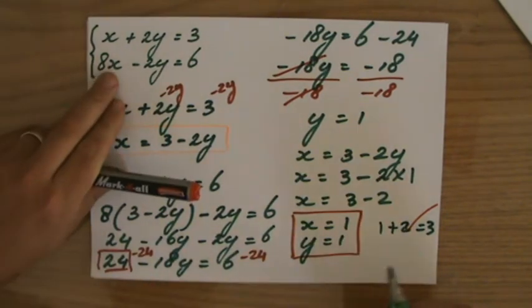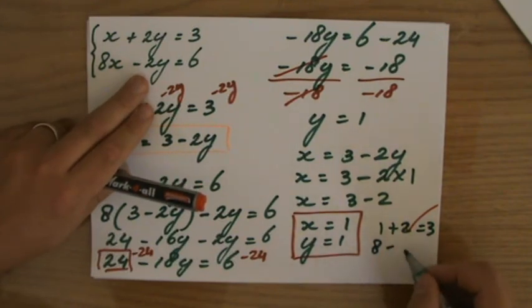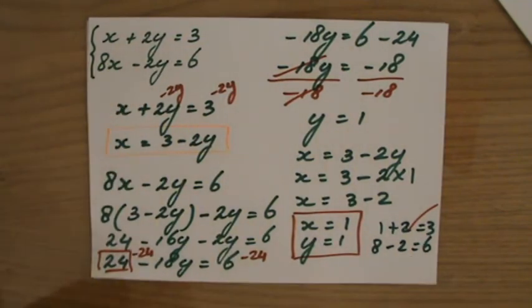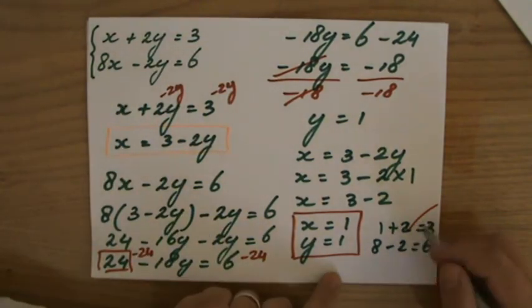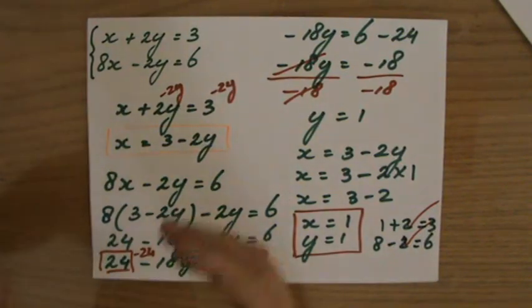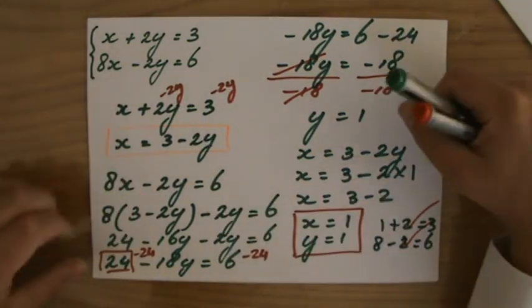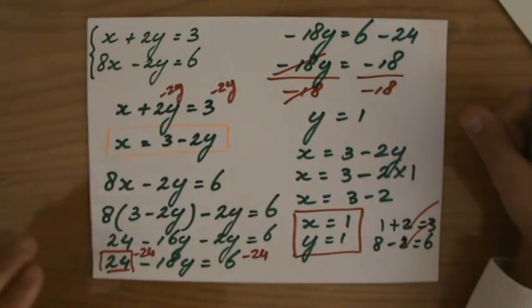I'm going to check it for both though. 8 times x, 8 times 1 is 8. Minus 2 times y, so minus 2 times 1, and that should equal 6. 8 minus 2, is that 6? It is indeed. So this is the only possible solution for these simultaneous equations, for them both to be true simultaneously.